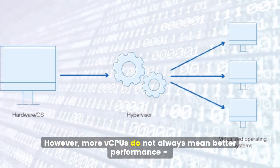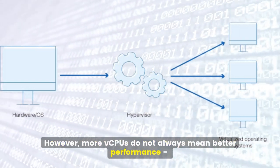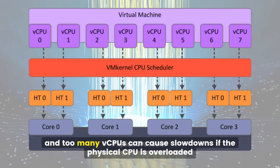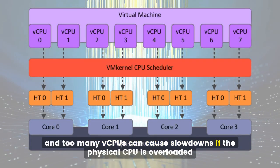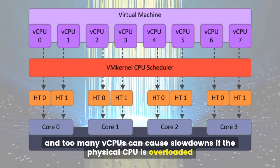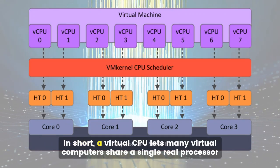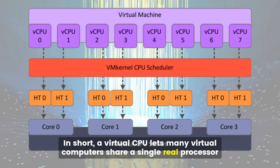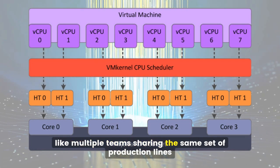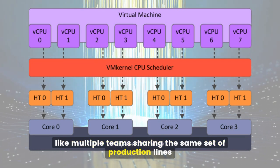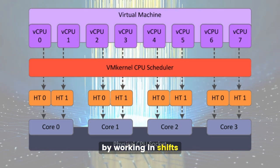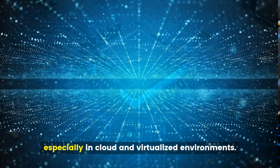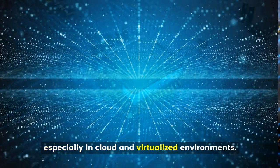However, more vCPUs do not always mean better performance — there's a balance, and too many vCPUs can cause slowdowns if the physical CPU is overloaded. In short, a virtual CPU lets many virtual computers share a single real processor, like multiple teams sharing the same set of production lines by working in shifts. This makes computing more efficient and flexible, especially in cloud and virtualized environments.